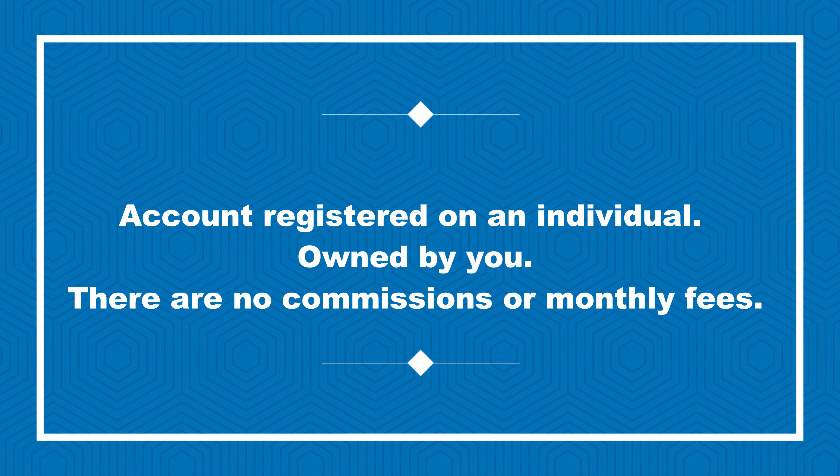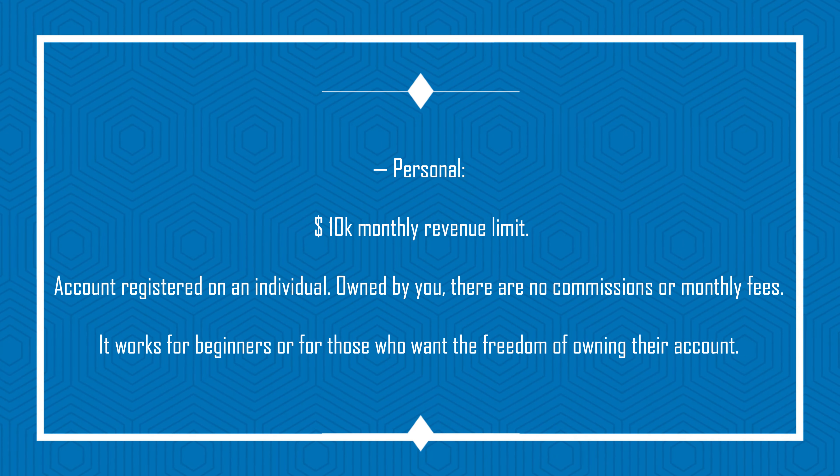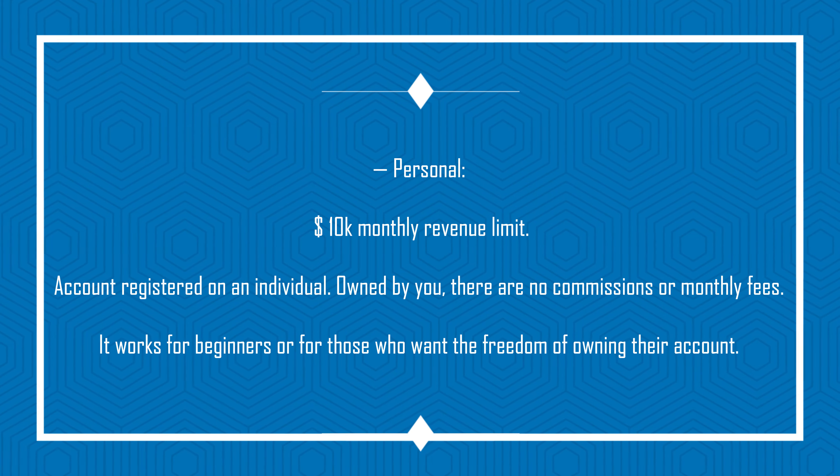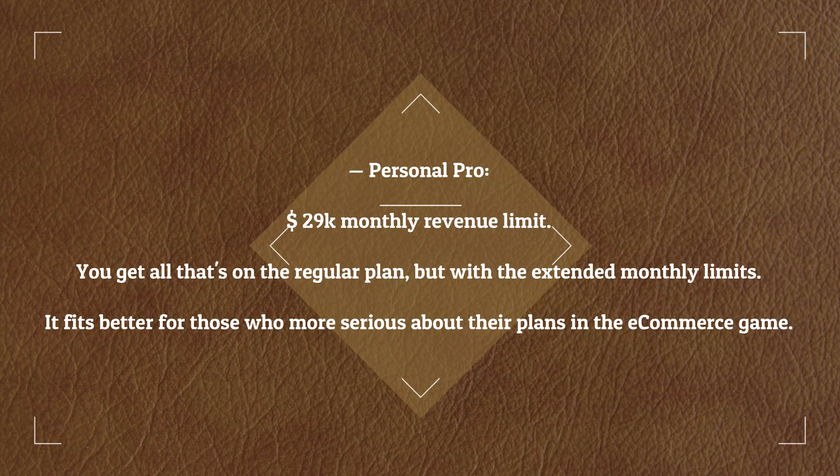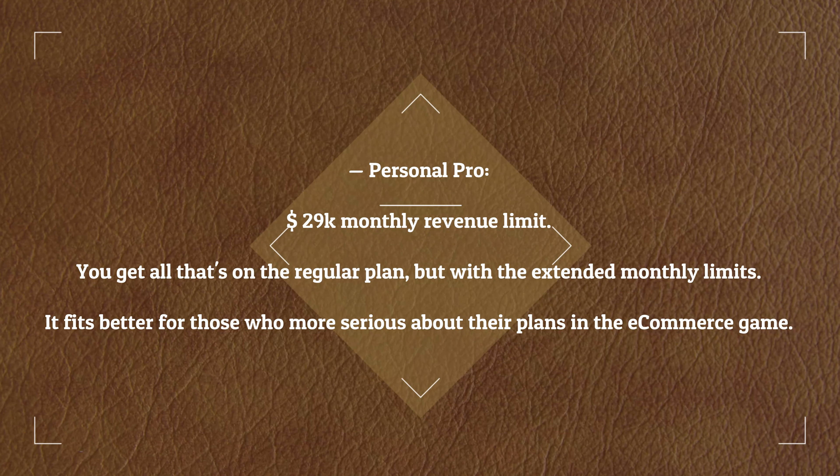This happens within two days. The process is simple: you identify the package you want — they have different packages including a basic package. You choose it, they send you an invoice, you pay, and they start their work. Within 48 hours you're going to have an active Stripe account connected to your Shopify store or website.